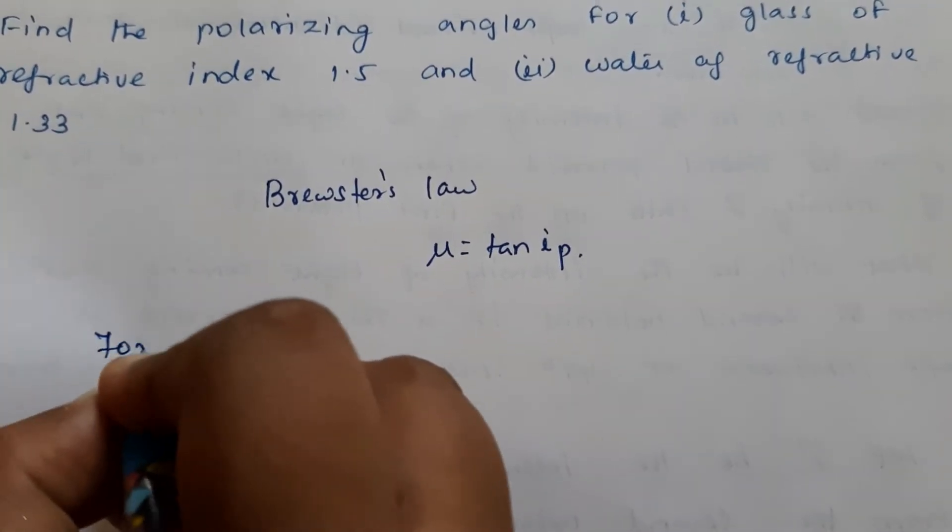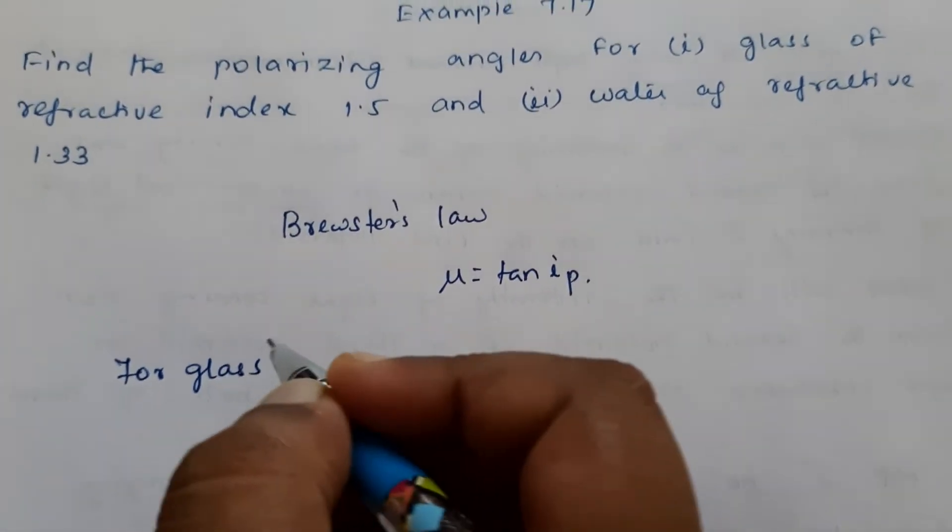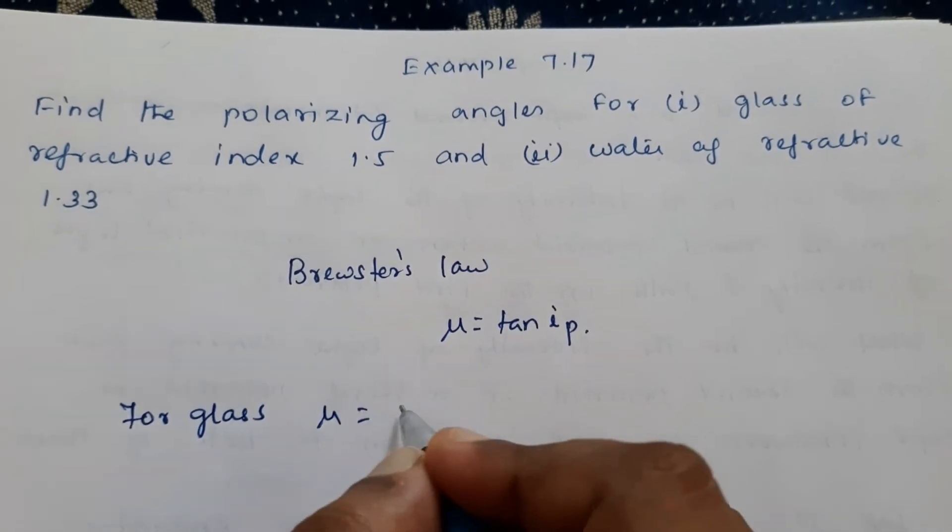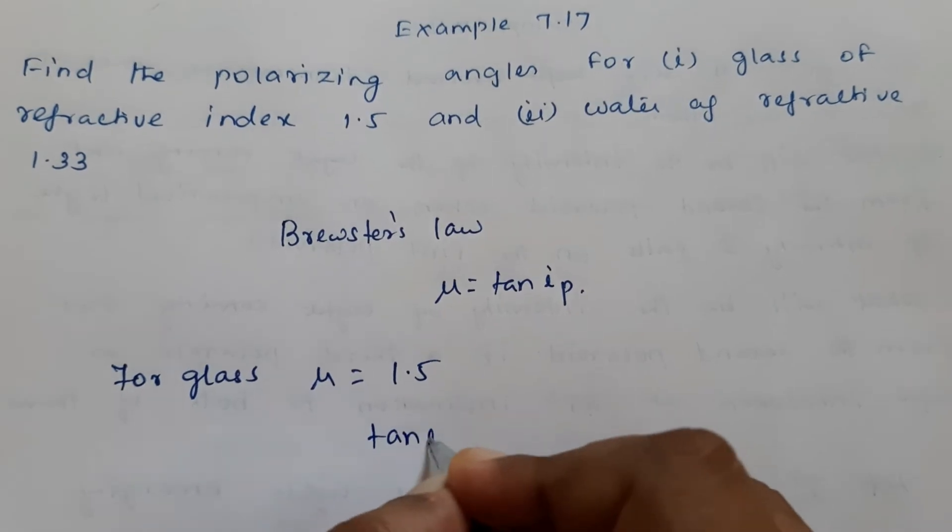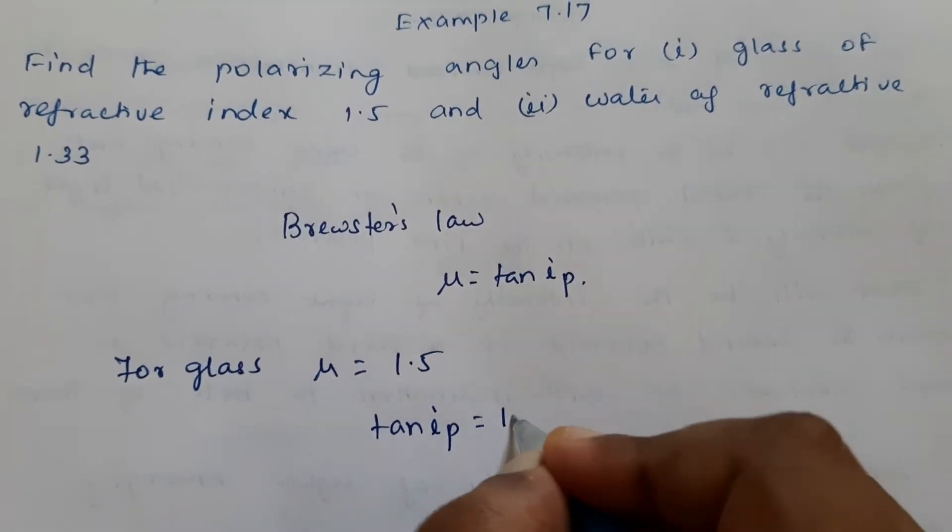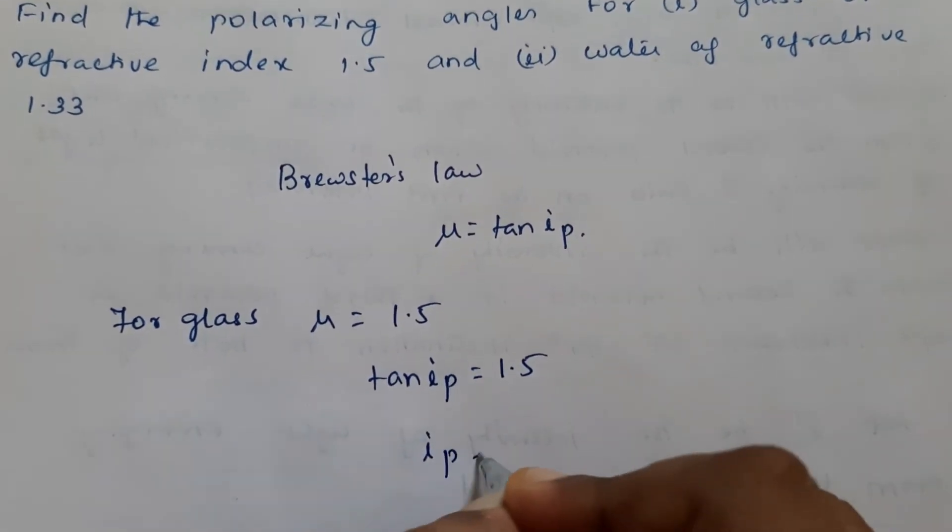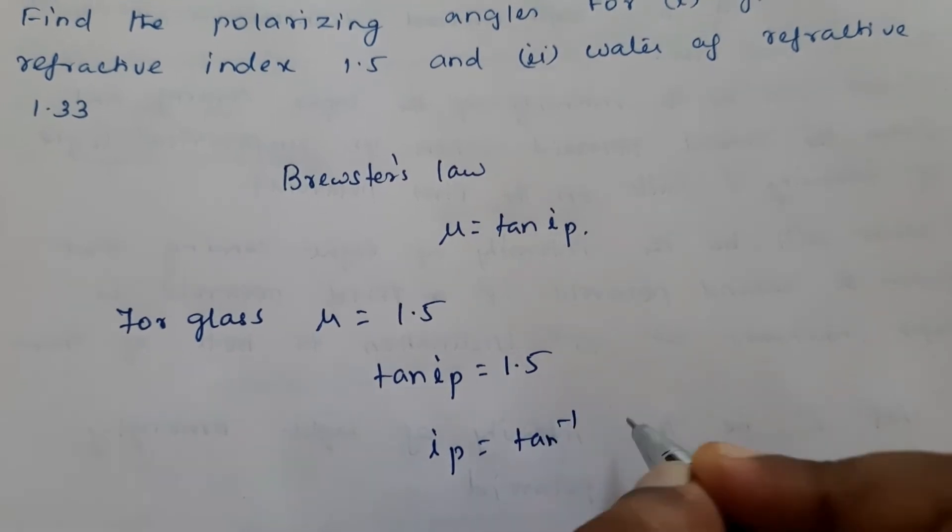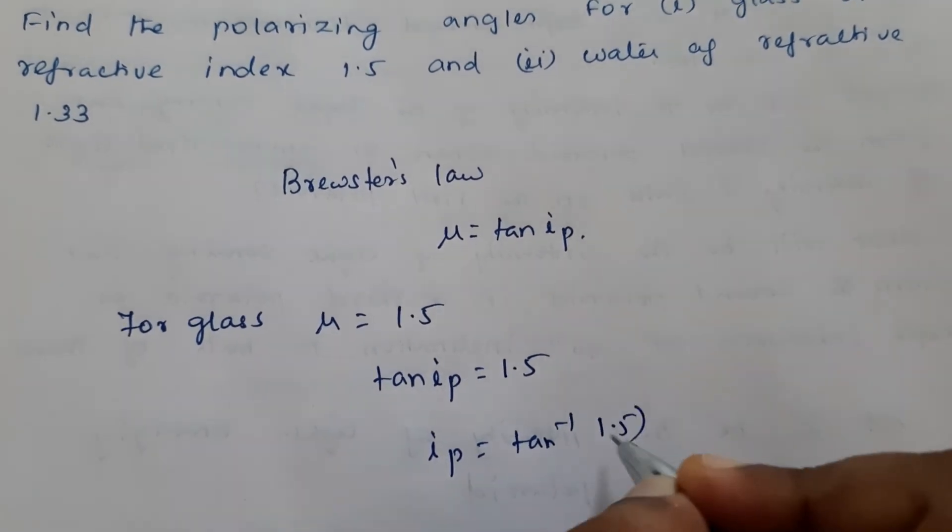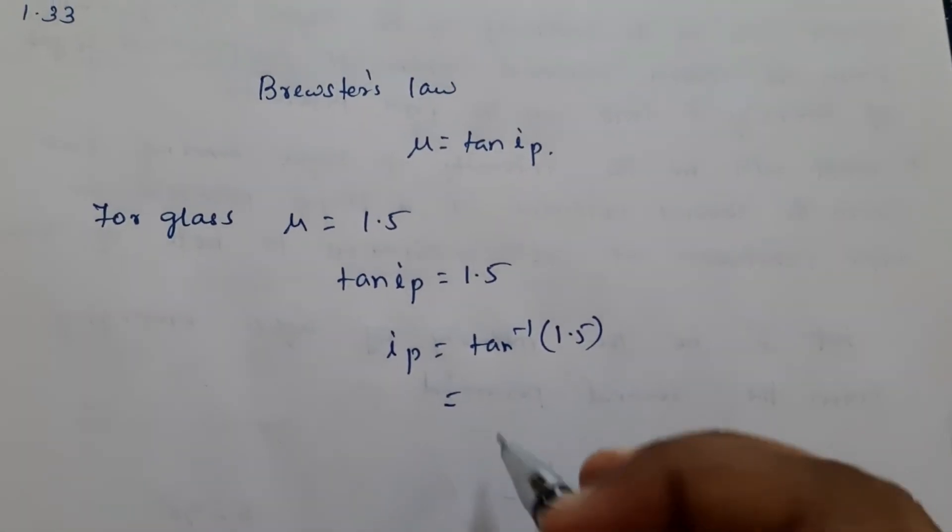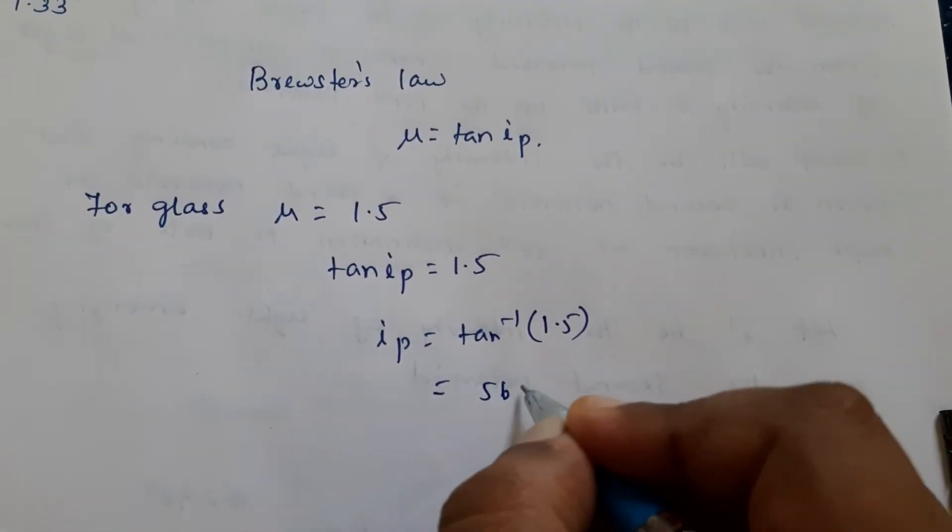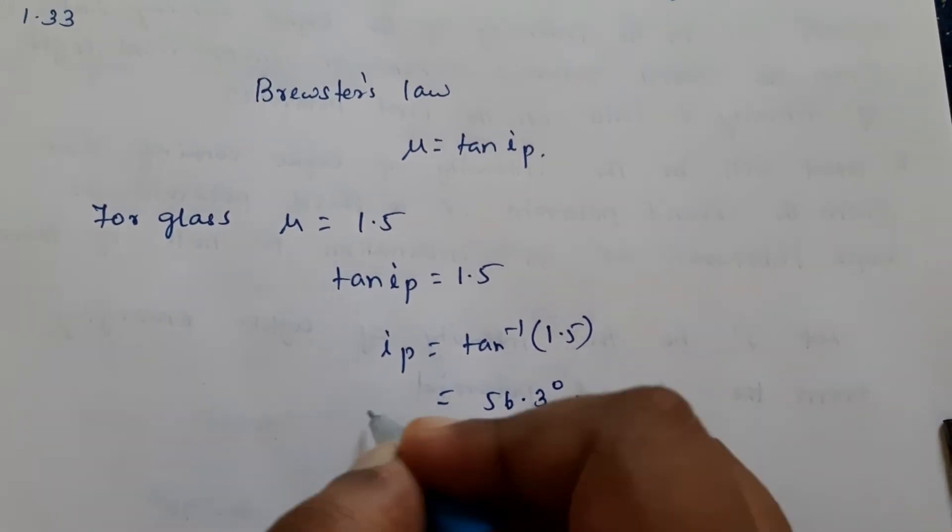For glass, μ = 1.5, so tan ip = 1.5, which gives ip = tan⁻¹(1.5). If you calculate the inverse tangent, you will get the angle as 56.3 degrees.